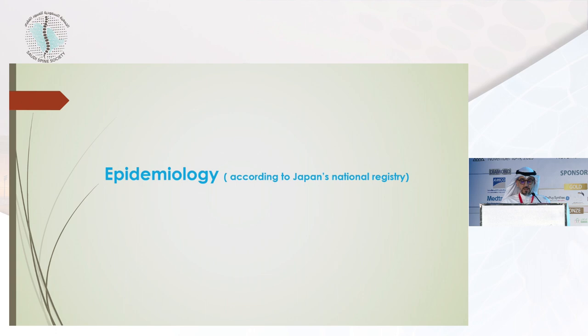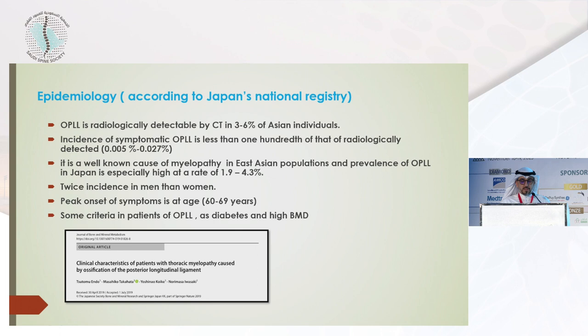Epidemiology: according to Japan's national registry, OPLL is more common in the Asian population. We can detect it by CT in 3 to 6 percent of Asian individuals. The incidence of symptomatic OPLL is less than one hundredth of the radiologically detected. It's a well-known cause of myelopathy in East Asian population, with prevalence in Japan especially high at 1.9 to 4.3 percent, twice the incidence in men than women, and peak onset of symptoms in the sixth decade. Associated risk factors include diabetes and high BMD.